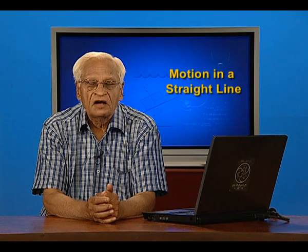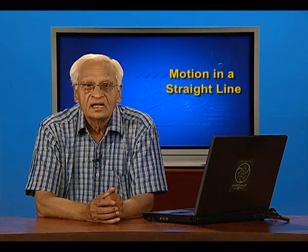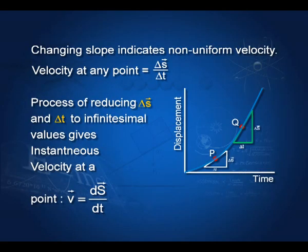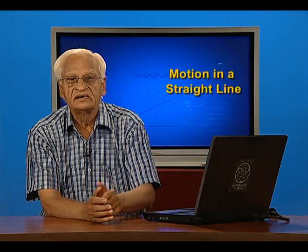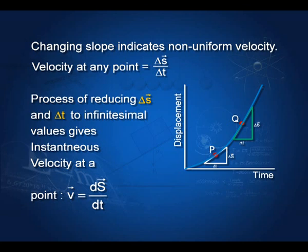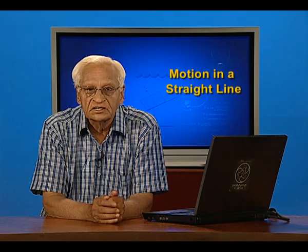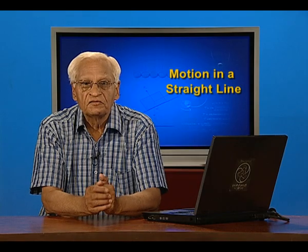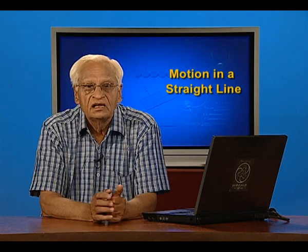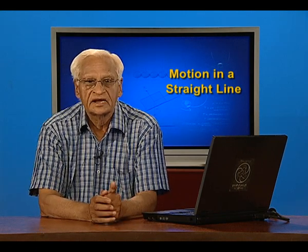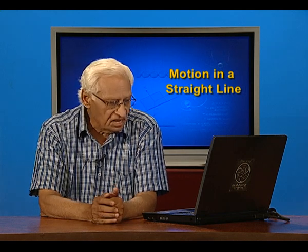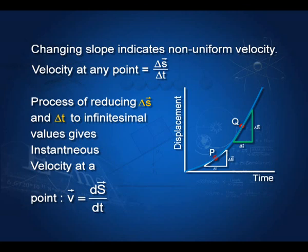However, if the graph is not linear, then the velocity at a point like P is found by the slope at P, that is ΔS/Δt. At point Q, the slope is again found by ΔS/Δt, and you can see the slopes at these two points are different — meaning the velocity is changing. If the velocity is not constant, then we define instantaneous velocity as vector v equal to dS/dt.